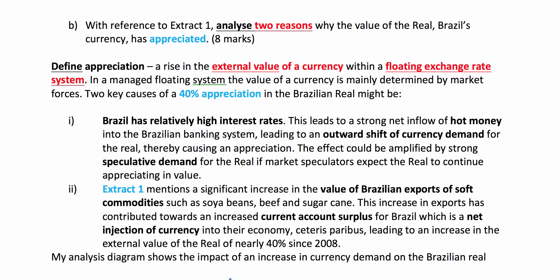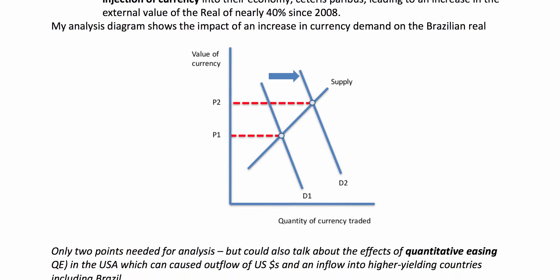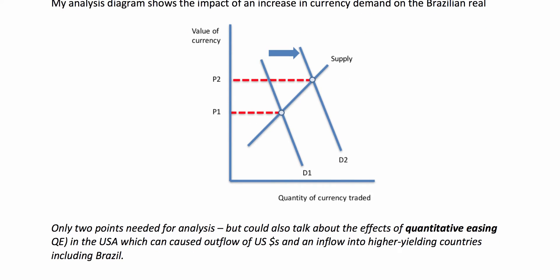Extract one also mentions the increase in the value of exports of soft commodities. Brazil is of course a big natural resource exporter. You can talk about the link between rising export revenues, current account surplus, and the rise in the exchange rate — two key causes. It's always good to put an analysis diagram in, showing how an outward shift of demand for the Brazilian real has increased its value by about 40%. You could also bring in the effects of quantitative easing in the United States, causing an outflow of dollars into countries like Brazil where yields were higher. But for an eight-marker, just two points analysed.